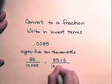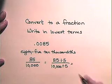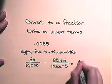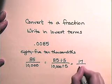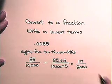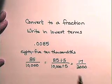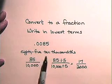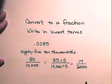We will divide 10,000 by 5 and we obtain 17 over 2,000. So, in lowest terms, point 0085, 85 ten thousandths written as a fraction is 17 over 2,000.